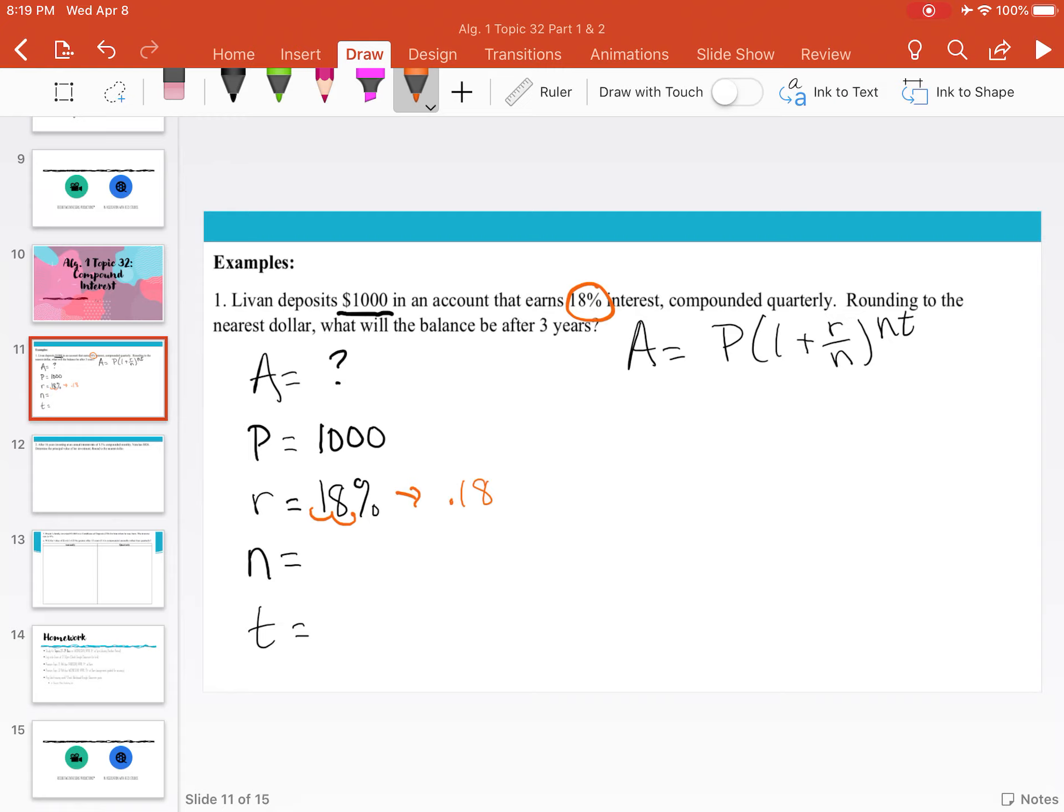N is the amount of times it's compounded. It's compounded quarterly here. Since quarter means there are 4, N is 4. T is the number of years. We want to figure out the balance after three years, so T is 3.